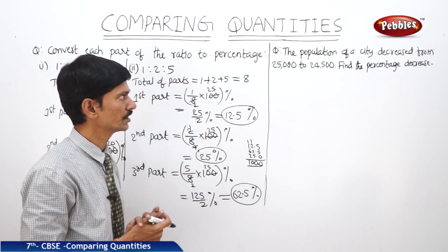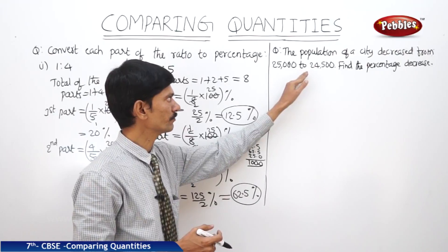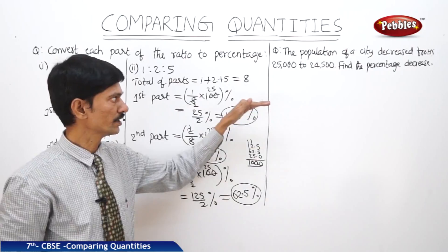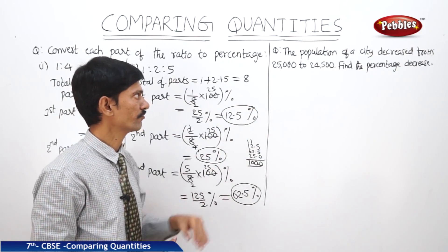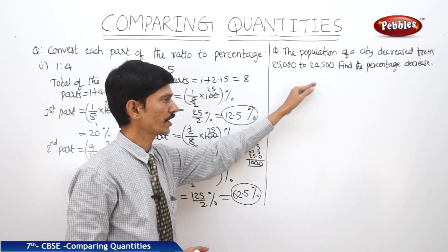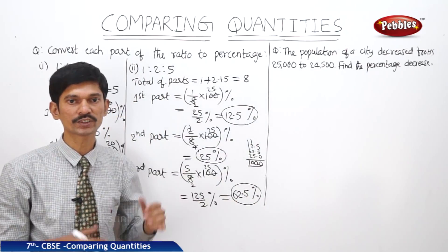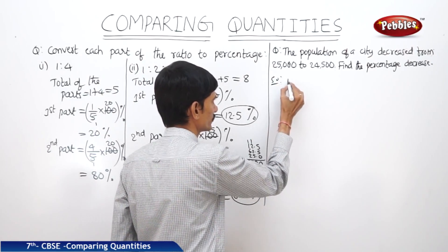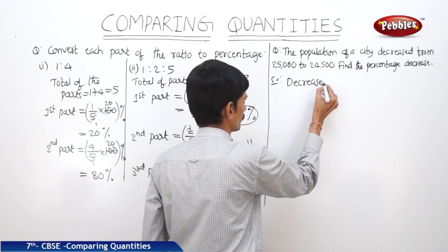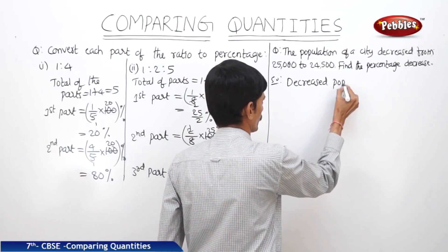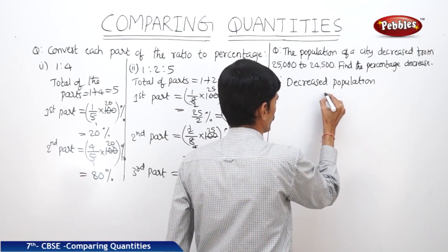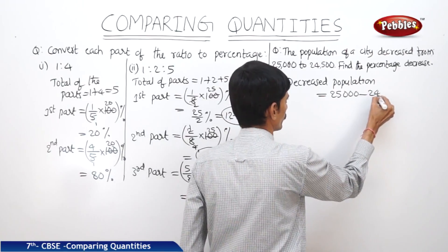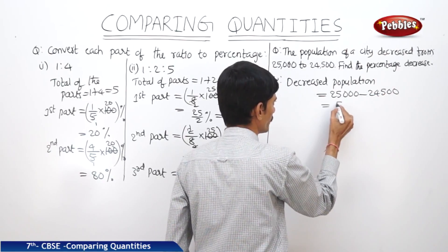The population of a city decreased from 25,000 to 24,500. Find the percentage decrease. The decreased population equals 25,000 minus 24,500, so 500 population was decreased.